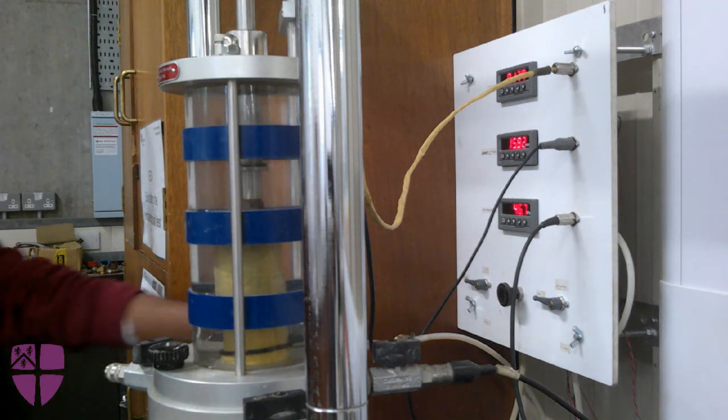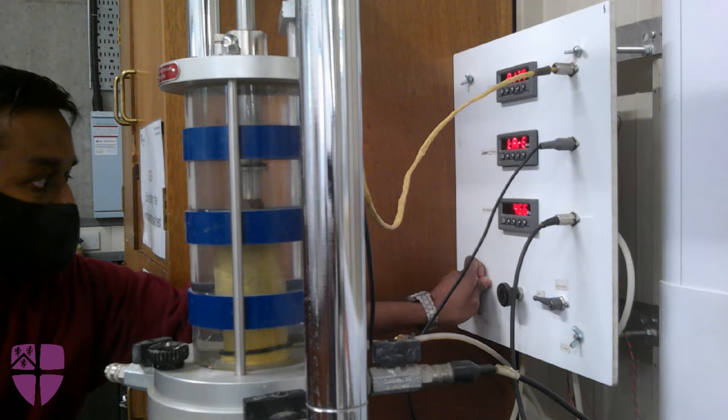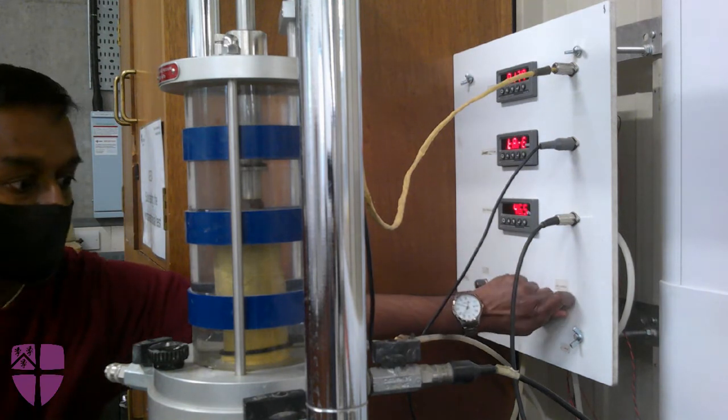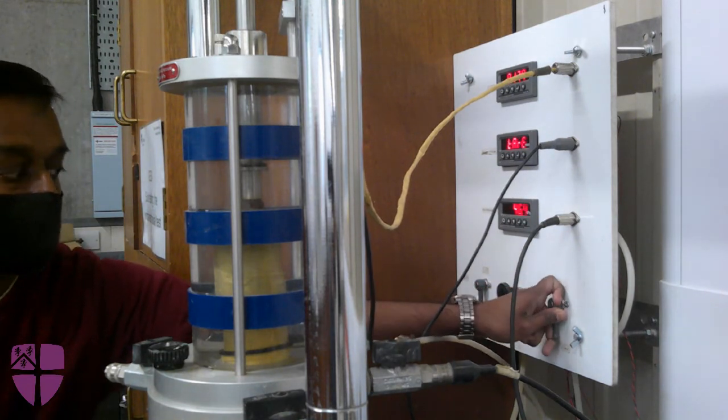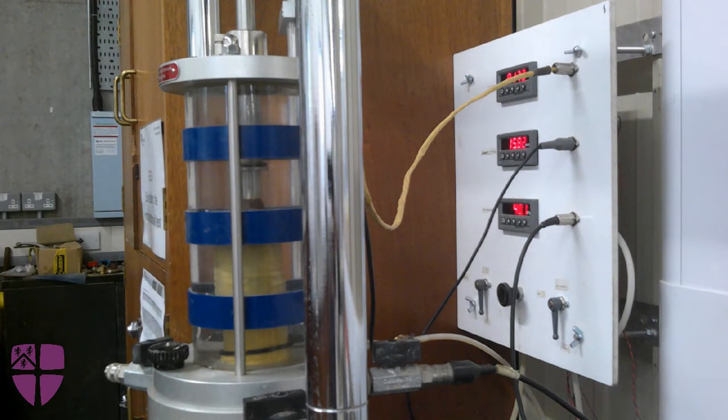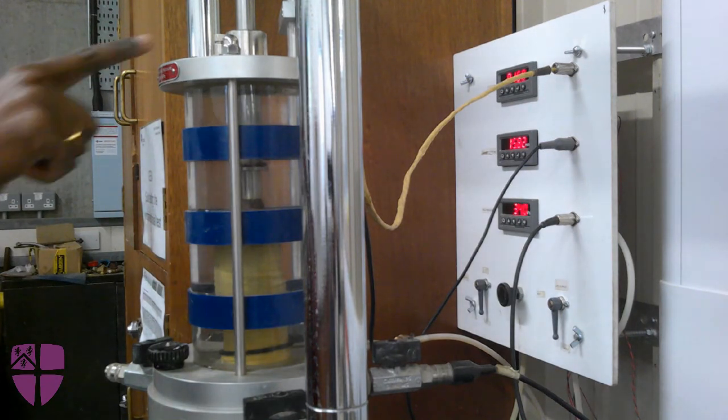After the completion of the test, drain out the water from the cell chamber by releasing the cell pressure and opening the water valve connecting to the chamber. You should open the air valve on top of the triaxial cell while draining out the water.